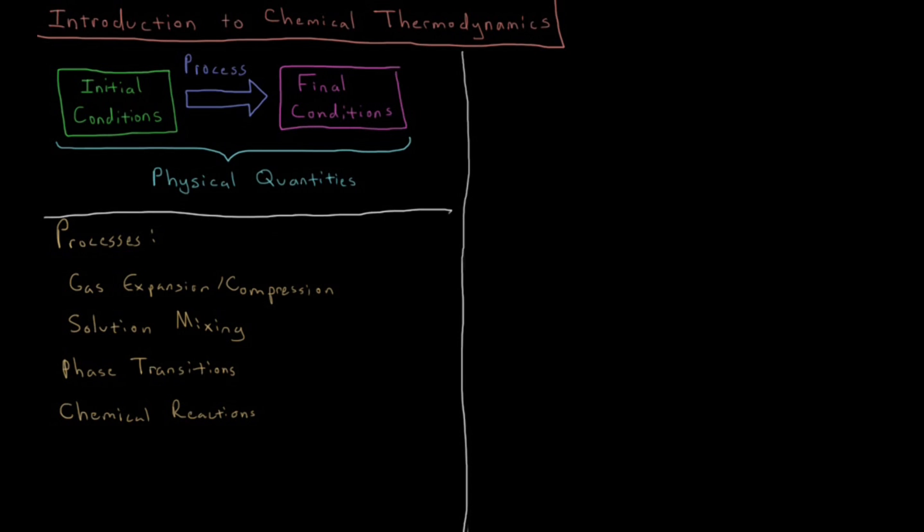And then we can also track the physical quantities which can be measured during such processes. Examples of such physical quantities could include things like, if we have a gas for example, we could measure things like pressure, volume, temperature, and number of particles, things which we're familiar with from the ideal gas law from general chemistry, PV equals NRT, particle count.